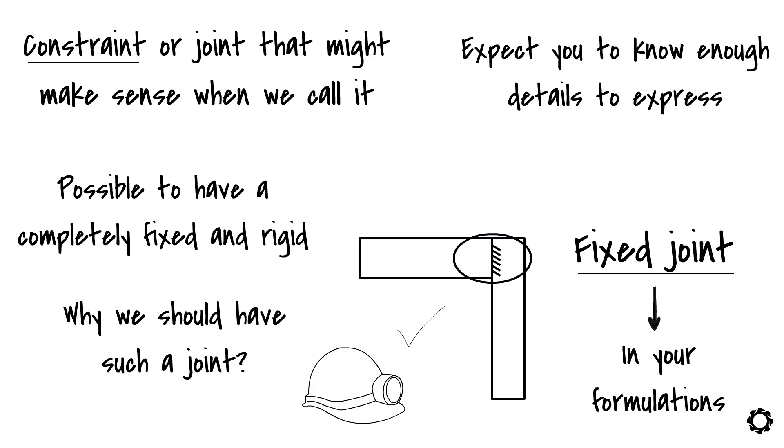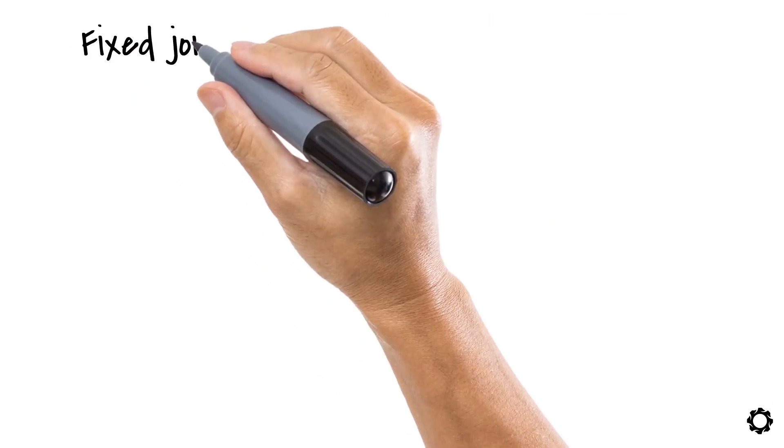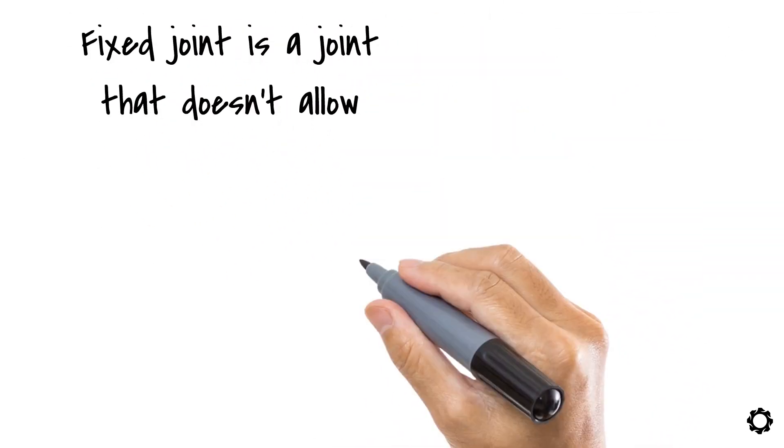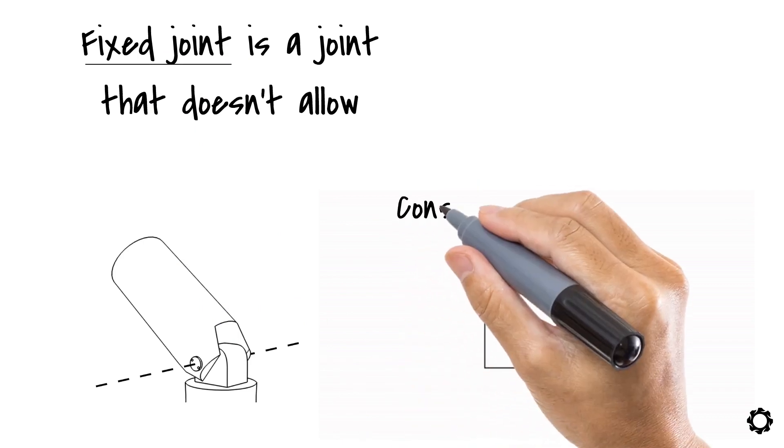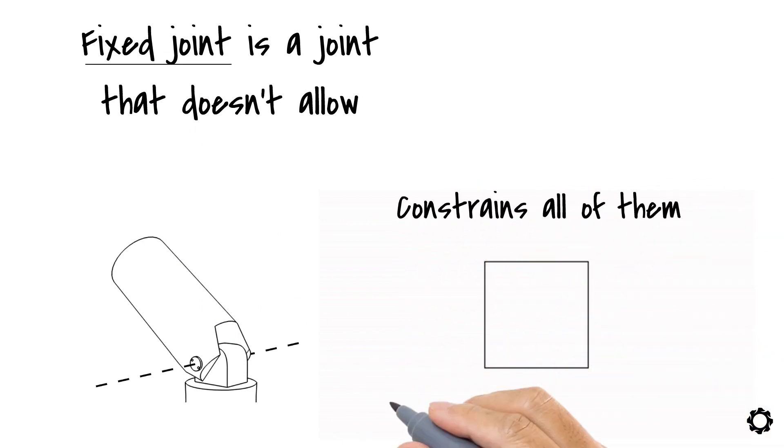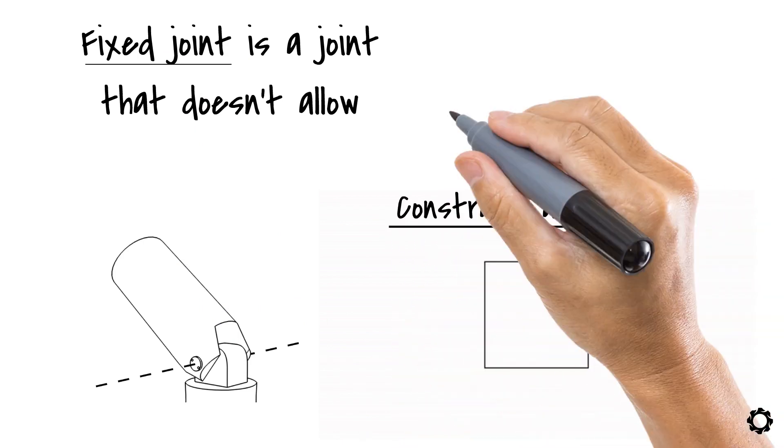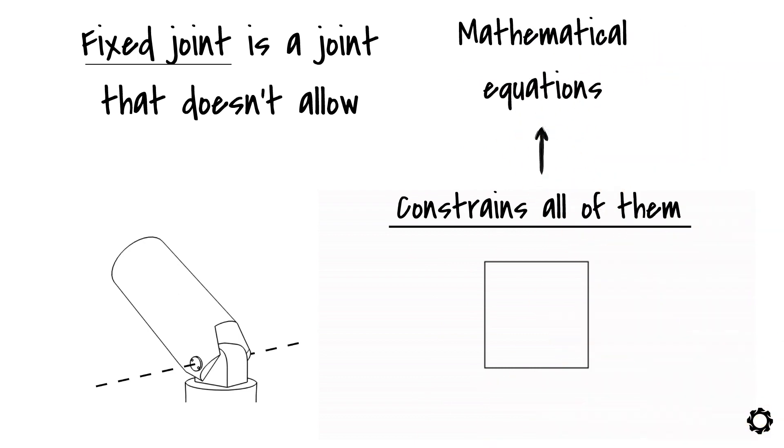Let's start. As the name implies, a fixed joint is a joint that doesn't allow any relative movement between the two bodies being connected by it. Meaning that from the three possible degrees of freedom a body can have in a planar movement or 2D mechanism, a fixed joint constrains all of them. We will need this interpretation to create the mathematical equations to represent this case.